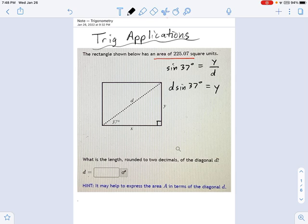And likewise, I can say that the cosine of 37 degrees equals x over d, adjacent over hypotenuse. So that means d times cosine of 37 degrees equals x.